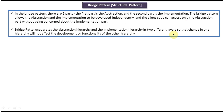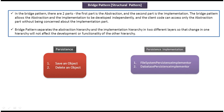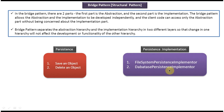I will show one example so that you will understand this explanation very clearly. I will show you how to save an object or delete an object in the persistence. What I can do is I can either save in a file system or a database. On the right side you can see a persistent implementation.